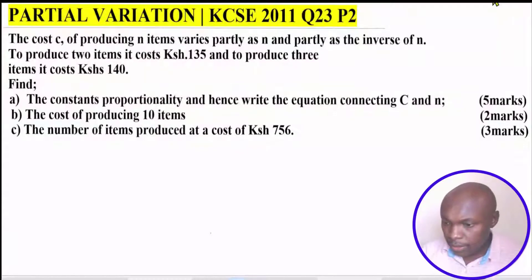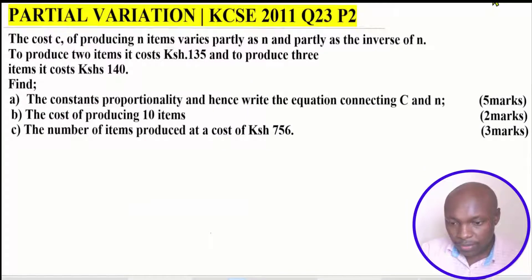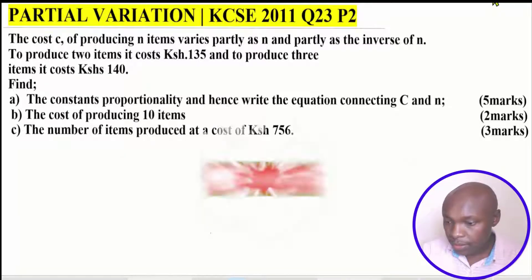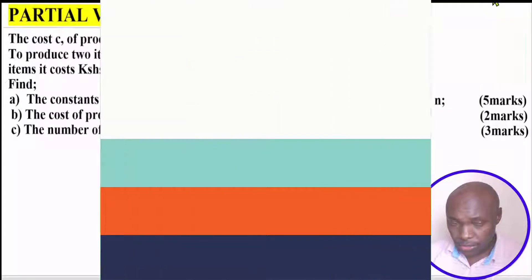Partial variation. The cost C of producing N items varies partly as N and partly as the inverse of N. To produce two items it costs 135 shillings, and to produce three items it costs 140 shillings. Find the constants of proportionality and hence write the equation connecting C and N. Also find the cost of producing 10 items and the number of items produced at a cost of 756 shillings. Now let's go straight to the solution.